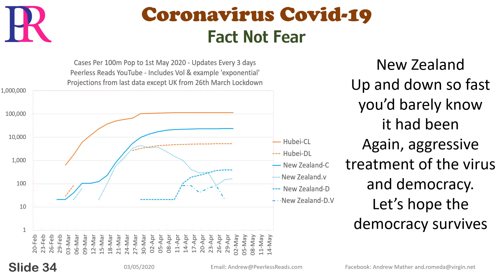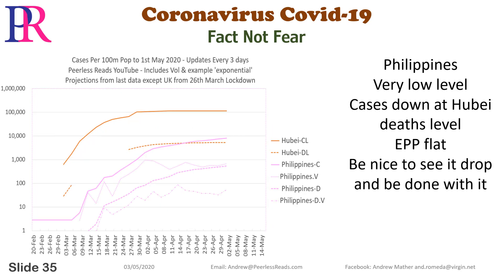New Zealand: up and down so fast you'd barely know it had been. Again, aggressive treatment of the virus and democracy — let's hope the democracy survives. Philippines: very low level, cases down at Hubei. Deaths level, EPP flat — be nice to see it drop and be done with it.